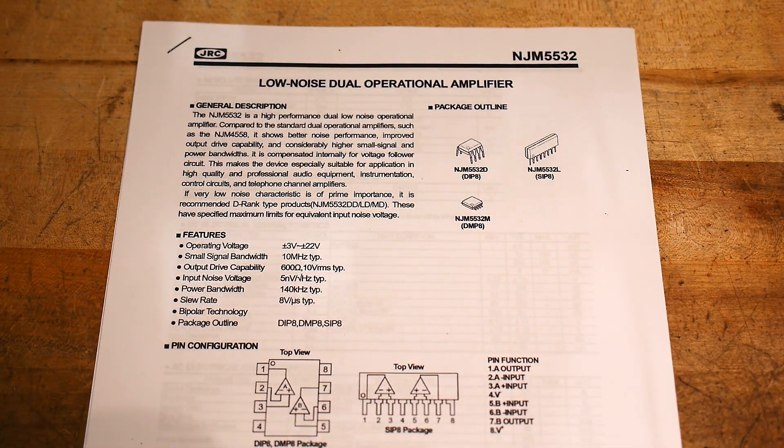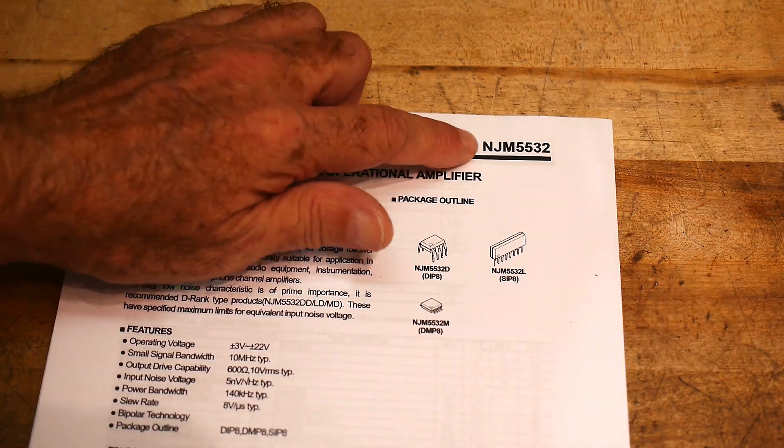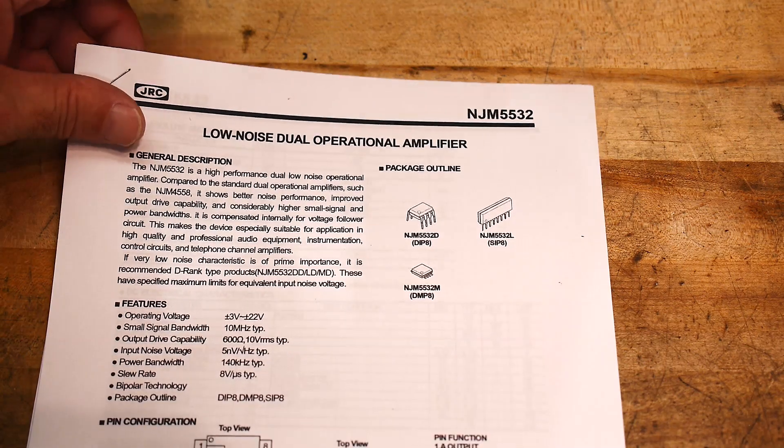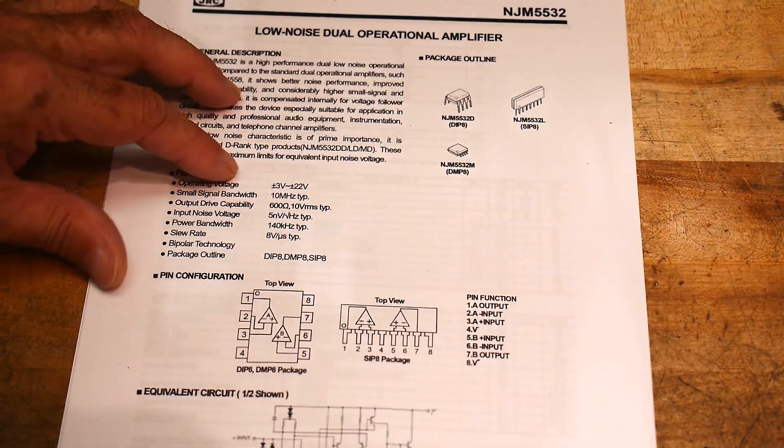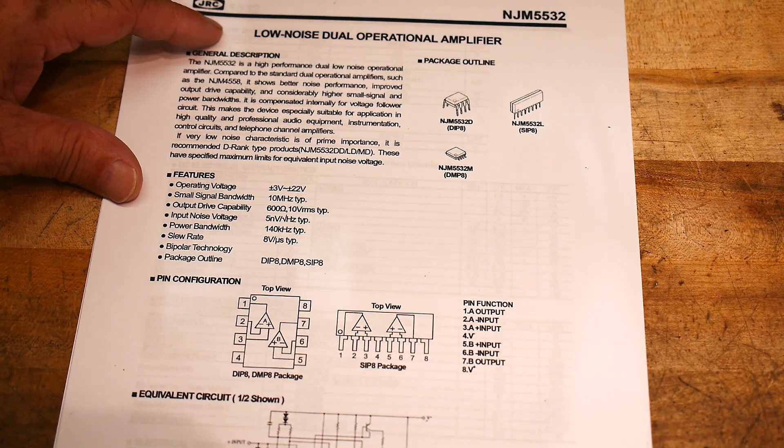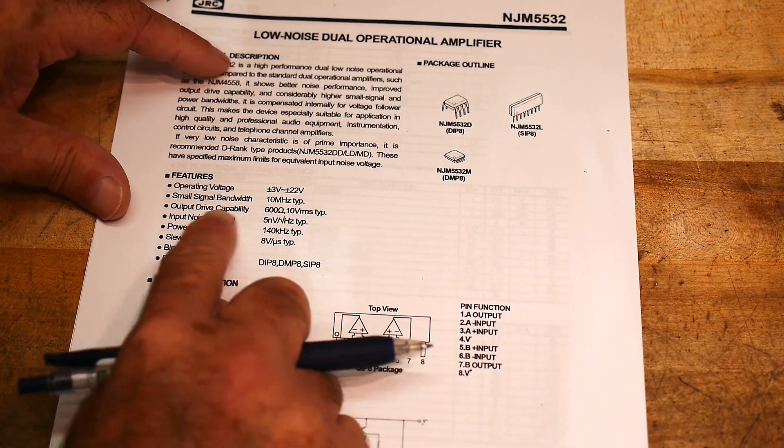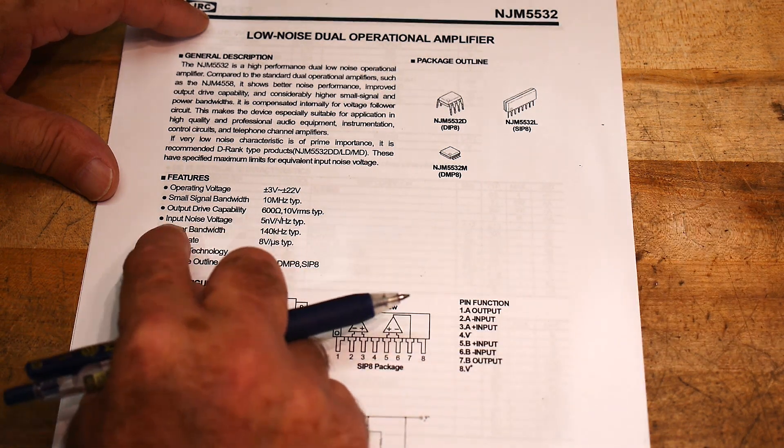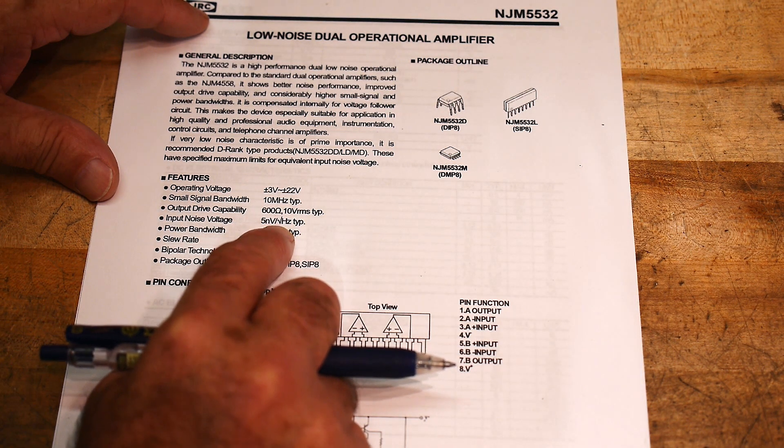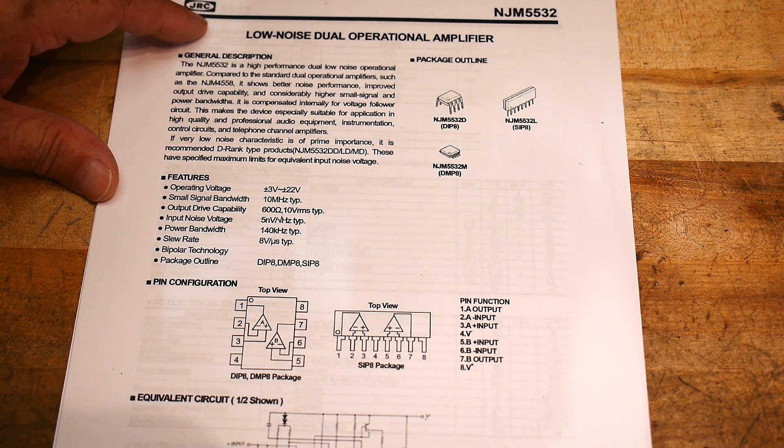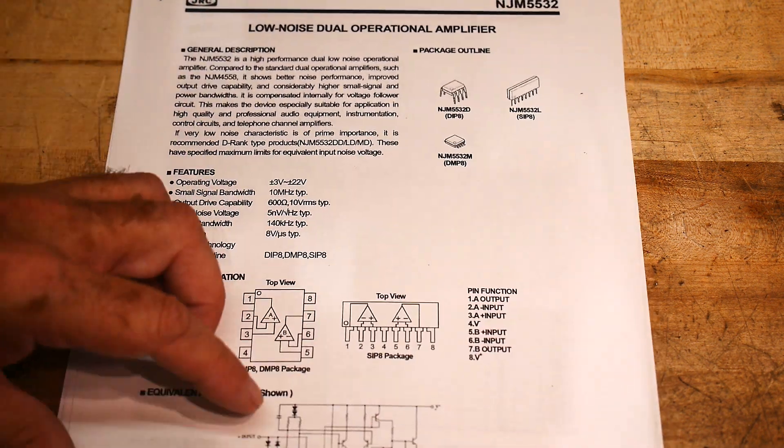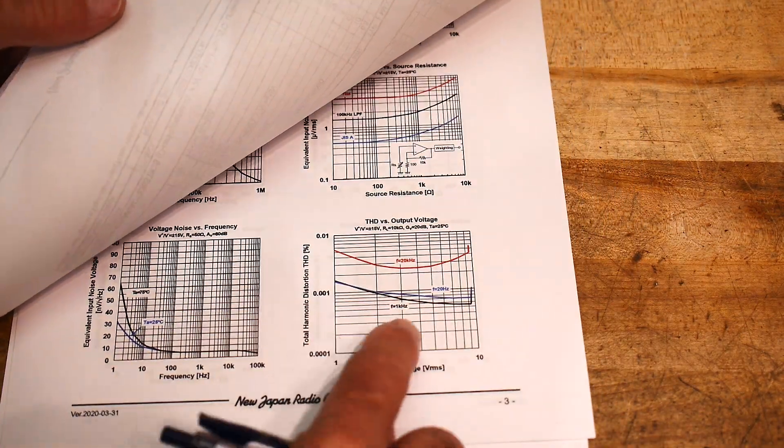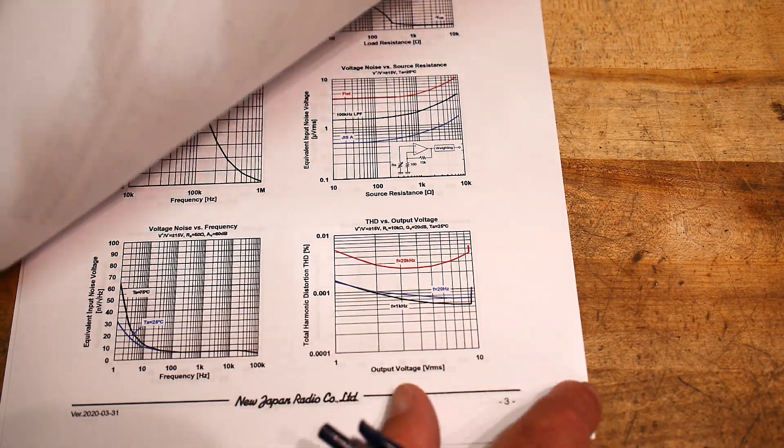The other op amp that I was interested in that I have a whole bunch of are the 5532. These are really ubiquitous, they're everywhere in audio equipment. And their claim to fame is really low noise and very cheap. They have a 10 megahertz gain bandwidth and input noise is 5 nanovolts per root hertz. They're just really nice little quiet low distortion devices. There's a nice graph here of total harmonic distortion, so they're very good.